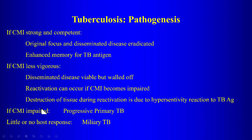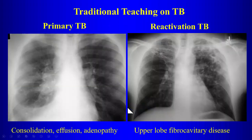If cell-mediated immunity is impaired, patients can develop progressive primary tuberculosis. With hematogenous dissemination, miliary tuberculosis can develop.